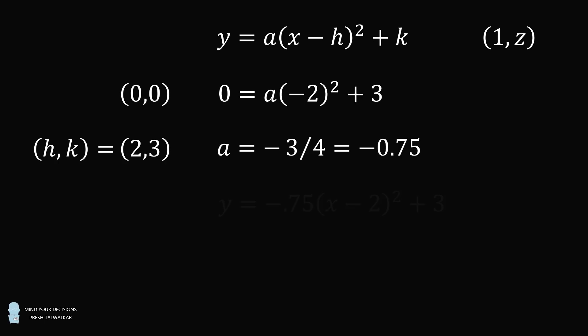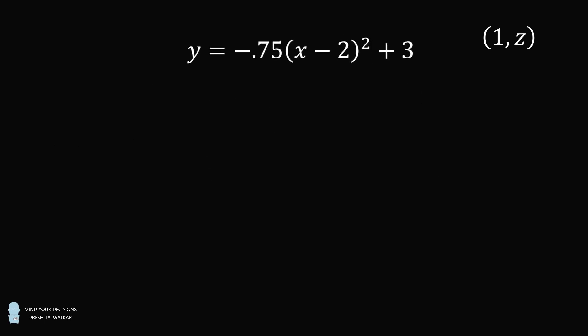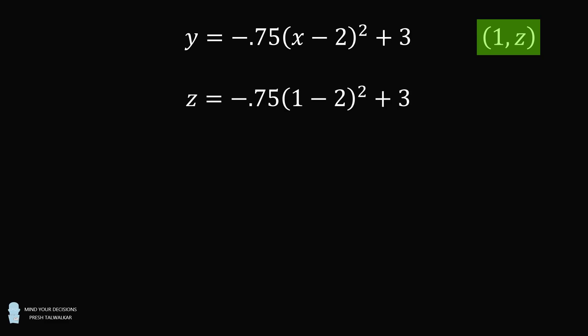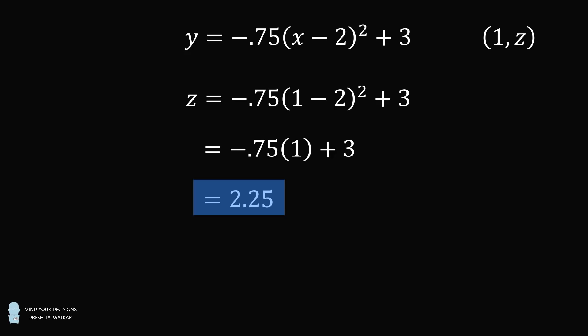We can substitute into the original equation, so we have y is equal to negative 0.75 multiplied by (x minus 2) squared plus 3. From here we want to solve for the value of z that corresponds to x is equal to 1. We substitute x is equal to 1, and then we simplify. We thus get that z is equal to 2.25 units, and that's the height of the water fountain.